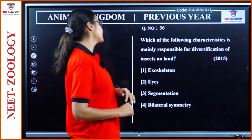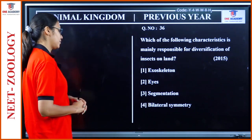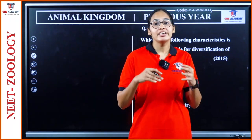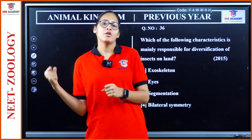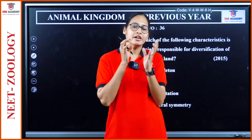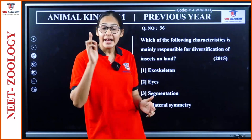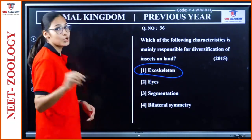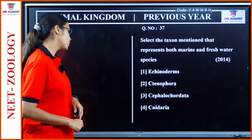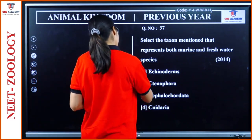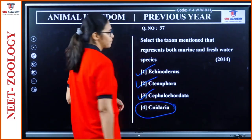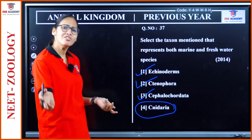Question 36: 'Which characteristic is mainly responsible for diversification of insects on land?' Arthropoda is the largest group with different varieties of morphology — comparing butterflies, prawns, scorpions. Their exoskeleton pattern makes them different. Option 1. Question 37: 'Which phylum represents both marine and freshwater species?' Echinodermata — exclusively marine. Ctenophora — exclusively marine. Coelenterata — exclusively marine. Nematoda — mostly marine, meaning some are freshwater. Option 4.